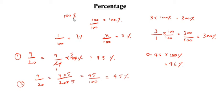Another method: 0.46. This is 1s, 10s, 100s place. So, 0.46 means 46 divided by 100. You have to write it as 46 divided by 100, which gives 46 percentage.